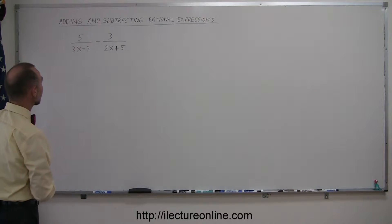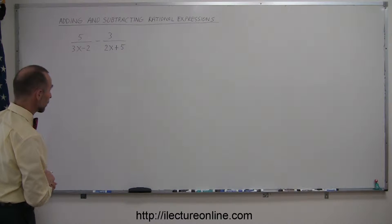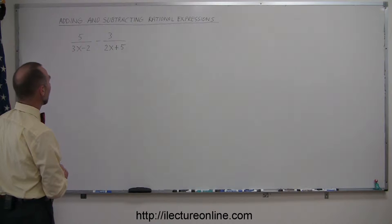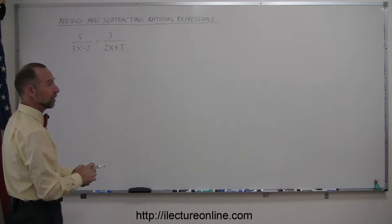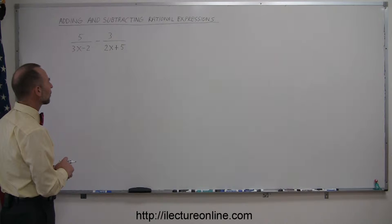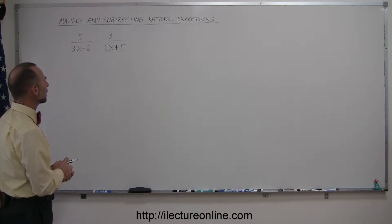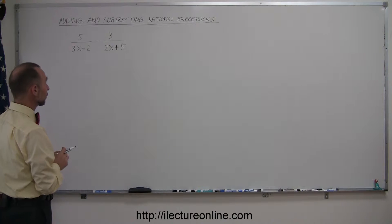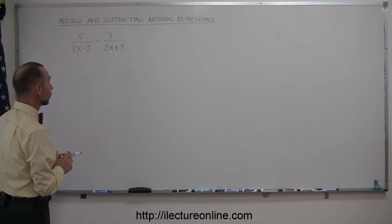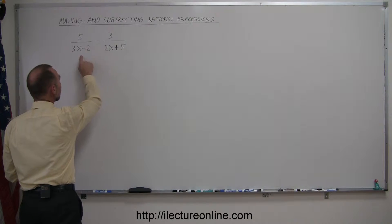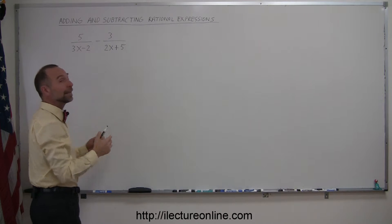Here's another example of how to add and subtract rational expressions. Here we have a subtraction of two rational expressions, and again the trick is to make the denominators the same. There's no lowest common denominator here, so the only way to get a common denominator is to multiply the two denominators together — multiplying this denominator by this one, and this denominator by this one, to make them common.